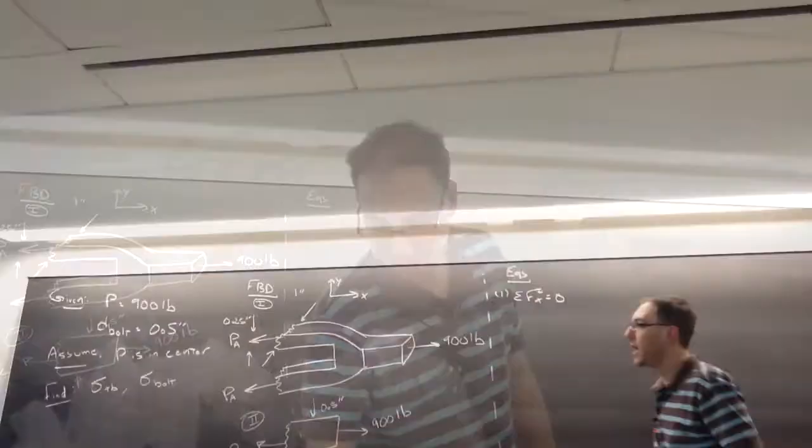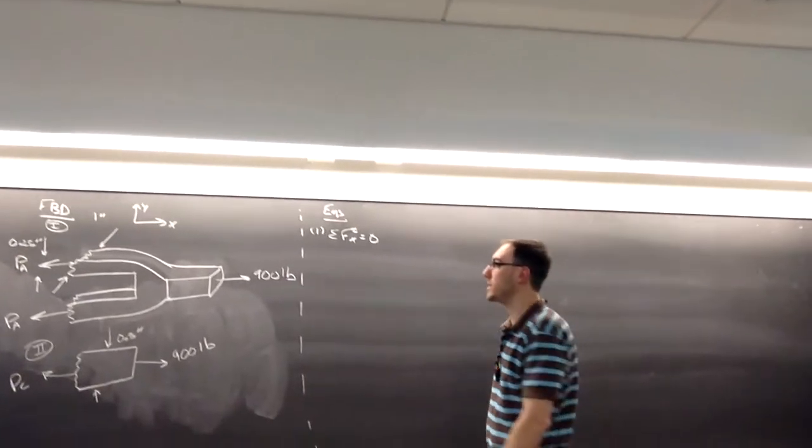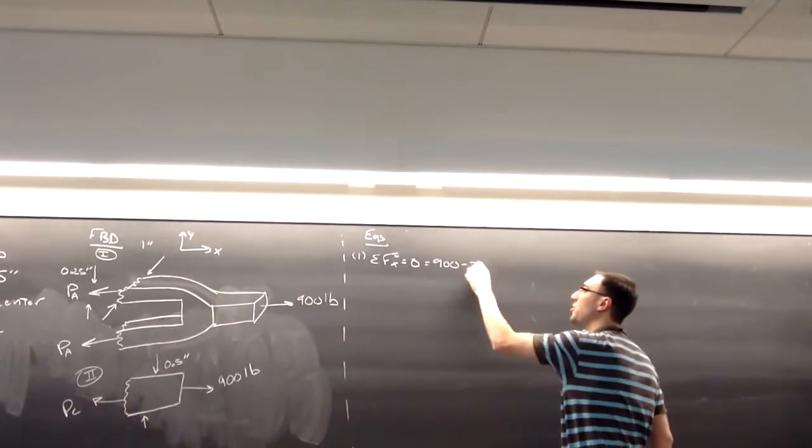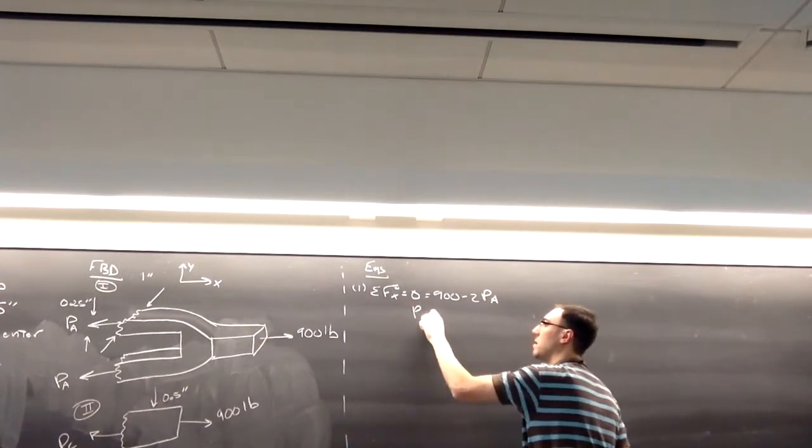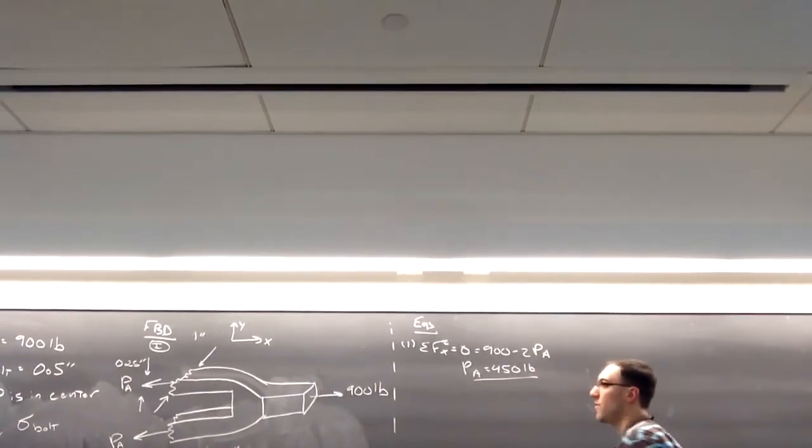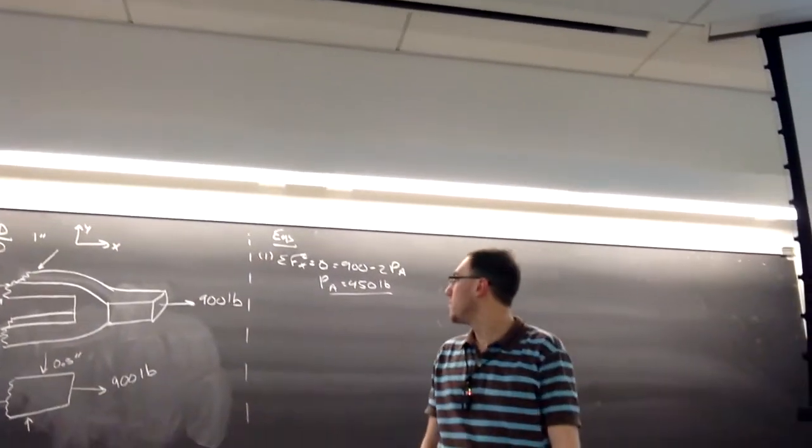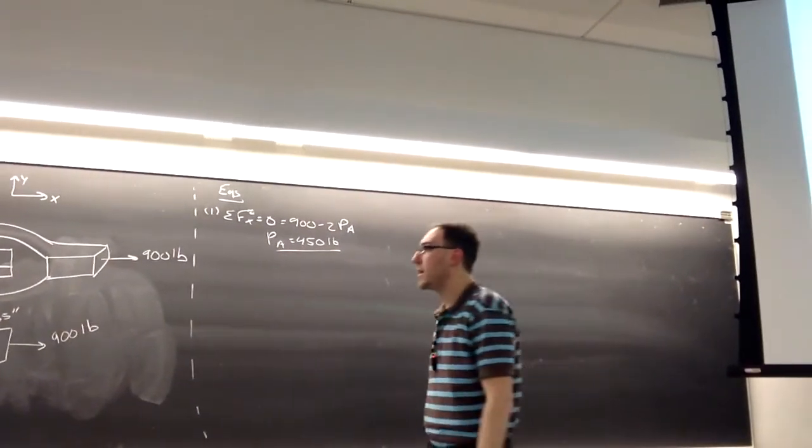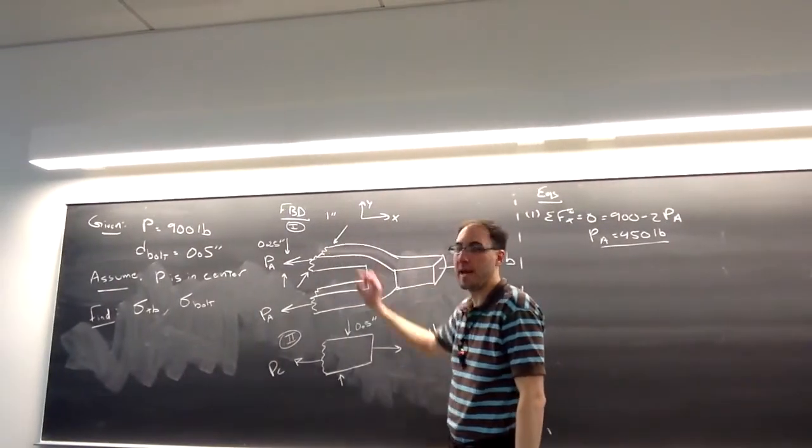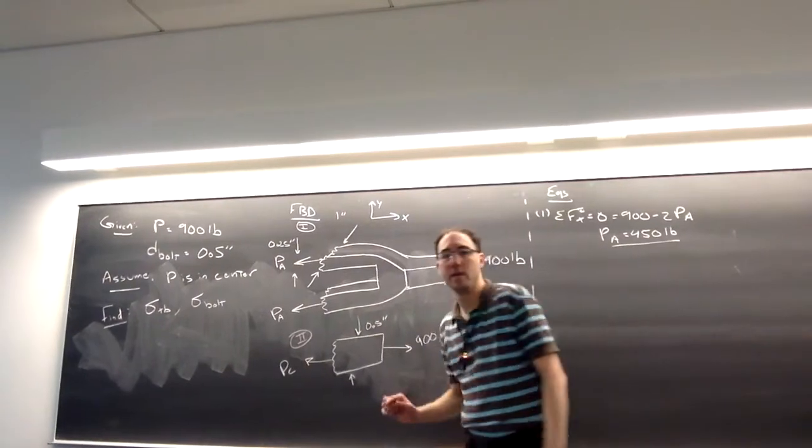In picture number one, when I sum forces in the X, I'll have 900 minus 2 times P-A. So the internal force at the turnbuckle, 450 pounds. Now again, this is the force in the top turnbuckle is 450, and the force in the bottom turnbuckle is 450.